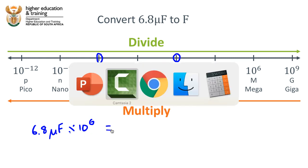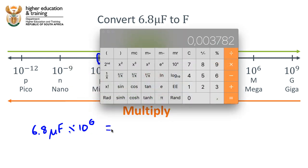I'm going to bring up my calculator. Okay, 6.8 divide that by 10 raised to the power 6 equals 0.000068.